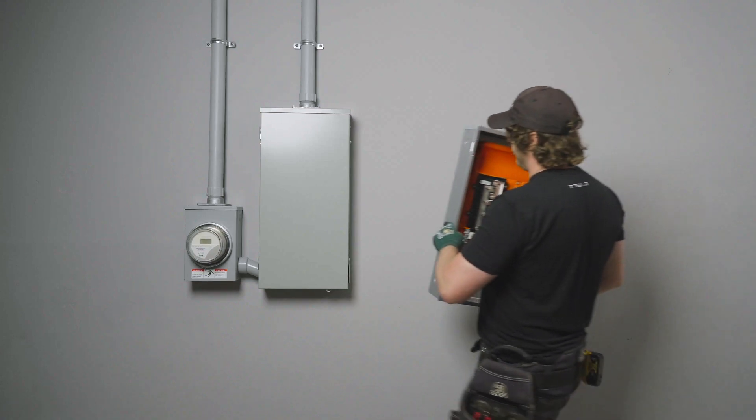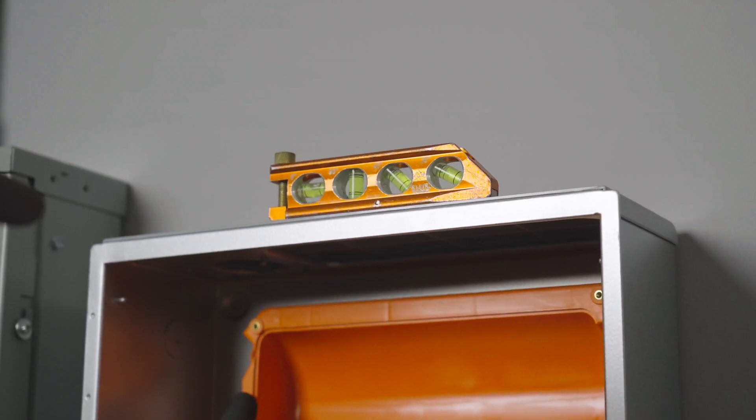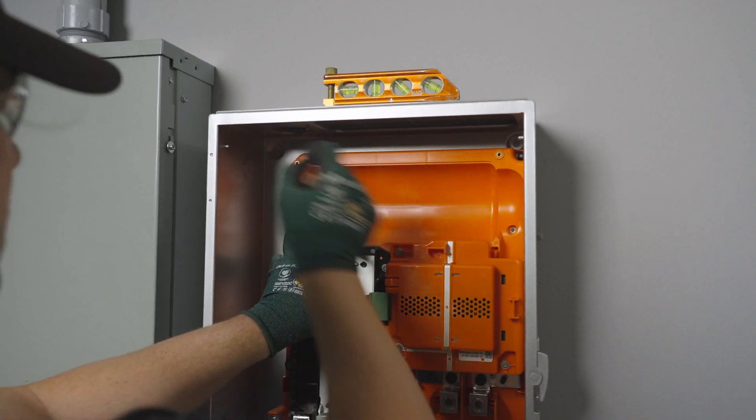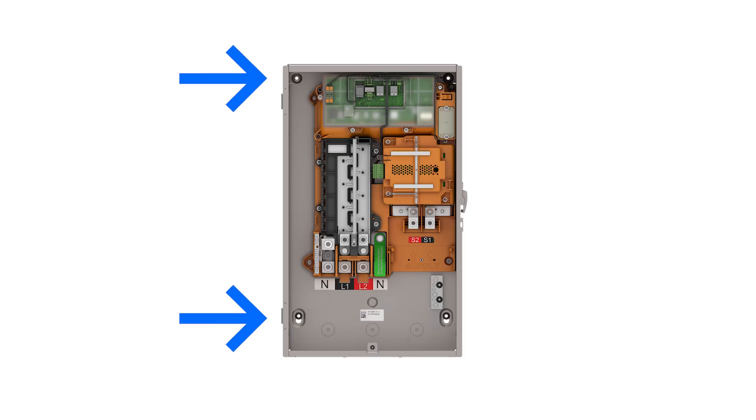After conduit knockouts have been made, hold the enclosure in place against the wall. Level the enclosure and mark the wall through each of the four fastener holes. For PowerShare Gateway, at least two fasteners must be secured to a structural member to support its extra weight.